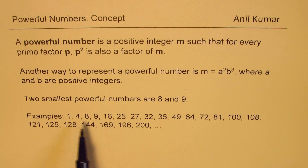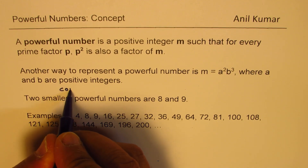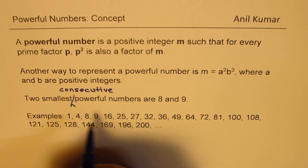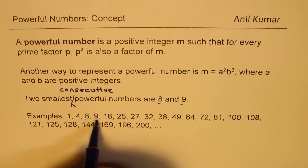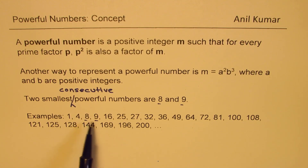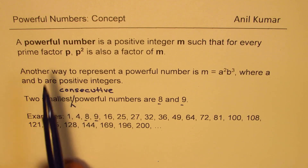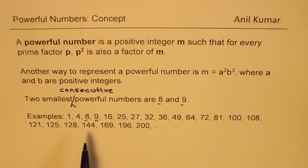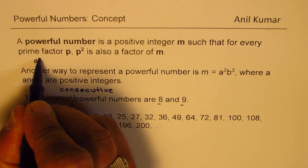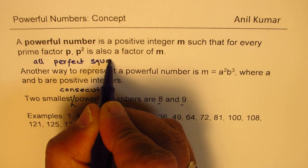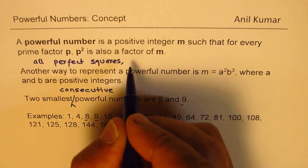In this series we find that the two smallest consecutive powerful numbers are 8 and 9. These are two consecutive powerful numbers, and we have infinitely many of those. So it is good to know about powerful numbers. Any perfect square is a powerful number, as are all cubes.